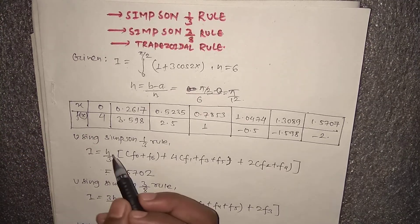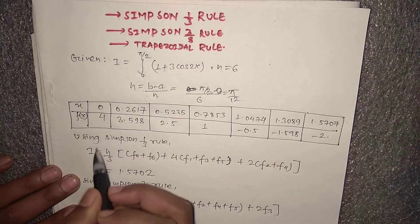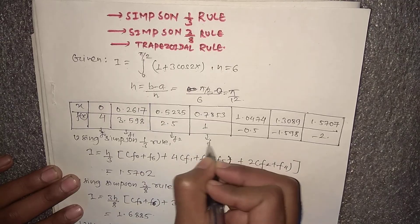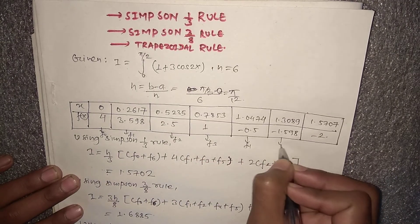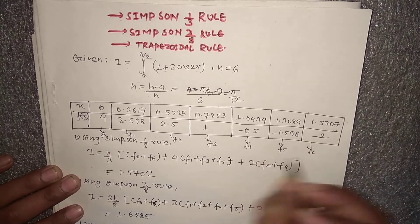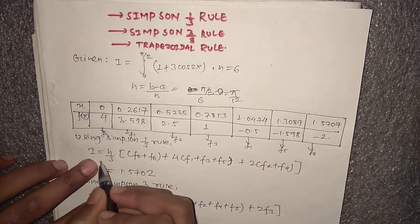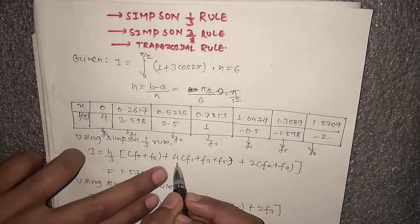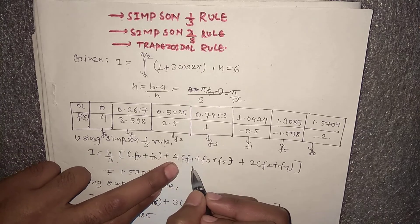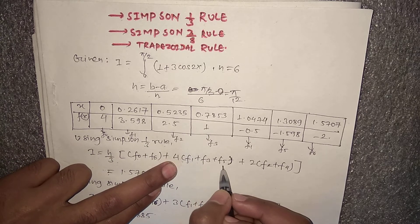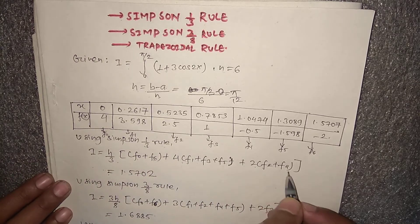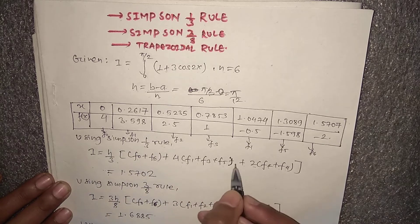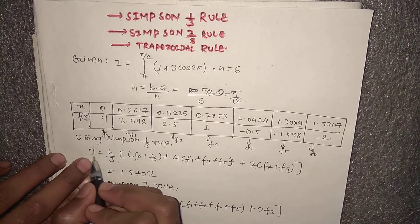Now using Simpson's 1/3 rule, we have the values F0, F1, F2, F3, F4, F5, and F6. The formula is I = h/3 times: (F0 + F6) — first term plus last term — plus 4 times the sum of odd-numbered terms (F1 + F3 + F5), plus 2 times the sum of even-numbered terms (F2 + F4). Using this formula we can calculate the value of the integral.